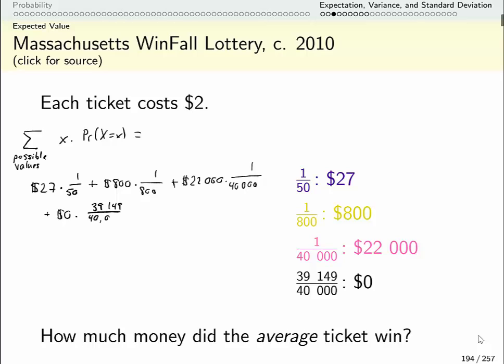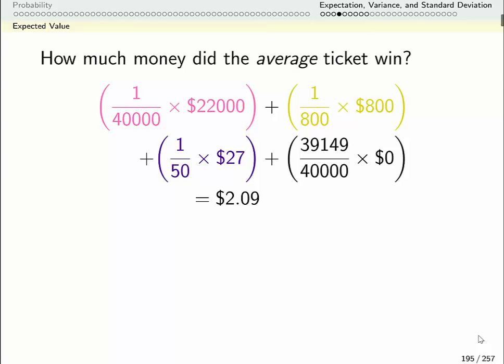So if I were to buy a whole bunch of these tickets, this is how much money I would expect to win on the average ticket. Now the point of this is to set it up not to figure it out so let's defer to a calculator here. So the average ticket won $2.09.